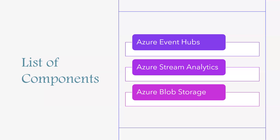In this real-time fraud detection scenario, Event Hubs receives all phone call metadata to be analyzed for fraudulent activity.